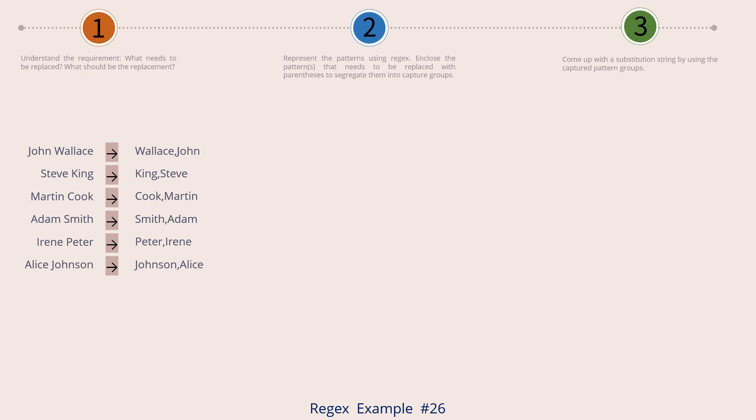Let's move to step 2 now. Here I have tried to represent the input string using regex patterns. Let's start reading from left to right. I have represented the first name using a character class for lowercase a to z as well as uppercase a to z in square brackets followed by plus. The square brackets indicate a character class for English letters.